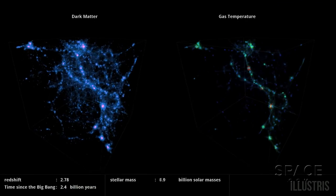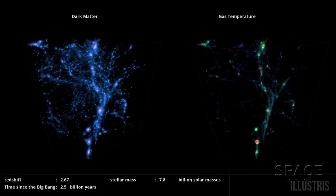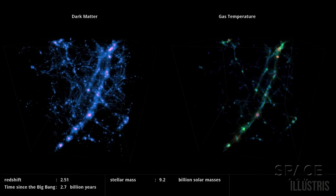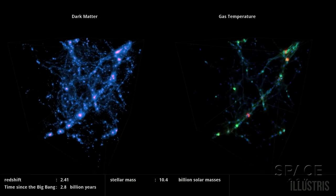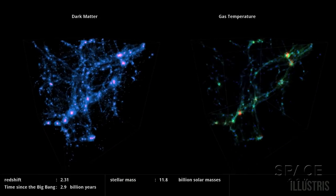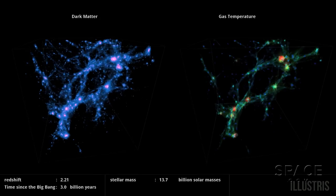Now we watch the goings-on within a cube of space. Both sides show the same region. But on the left, it is as if we've put on a pair of special glasses which let us see dark matter by its density variation.